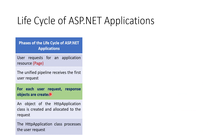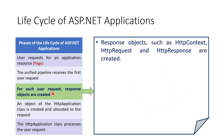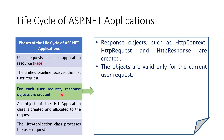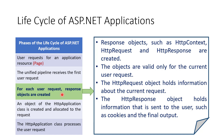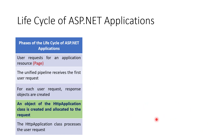The third phase is where request and response objects are created. In this phase, response objects such as HttpContext are created. The HttpContext class object contains an HttpRequest object and an HttpResponse object. These objects are valid only for the current user request. The HttpRequest object holds information about the current request, whereas the HttpResponse object holds information sent to the user, such as cookies and the final output.